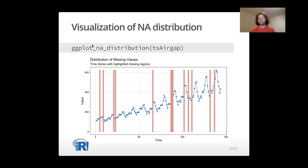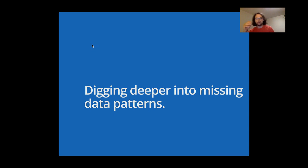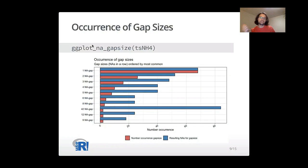And once you're done with this, you can even dig deeper into the missing data patterns. For example, with the ggplot_na_gapsize function, which basically gives you a ranking of the occurrence of gap sizes. With gap sizes, we mean NAs in a row. So there could be two NAs in a row. There can be five NAs in a row.